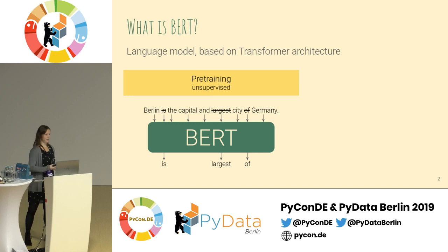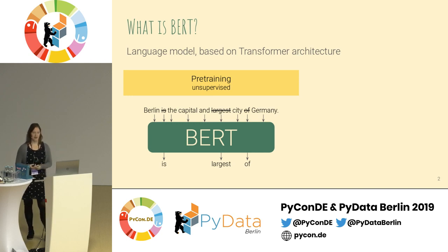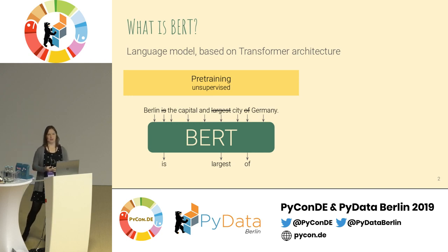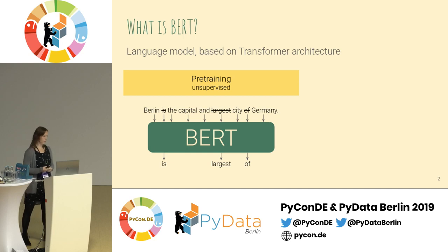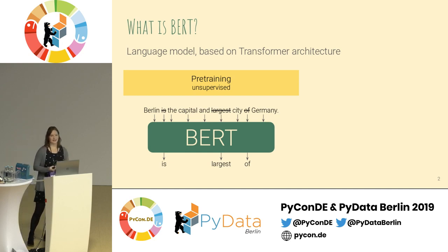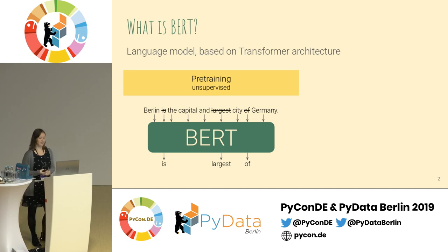We basically have enough unlabeled text. BERT was trained on really big corpora — for example, the entire dump of Wikipedia, which is quite a bit of text.